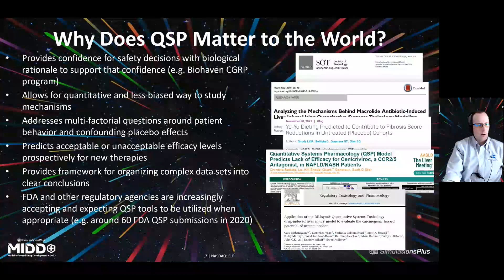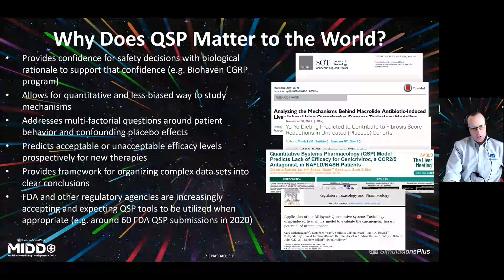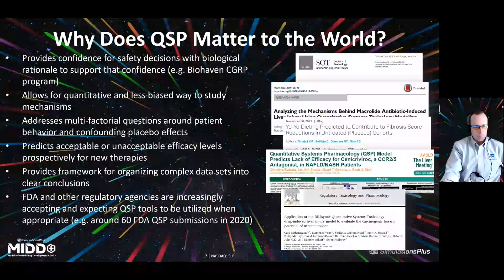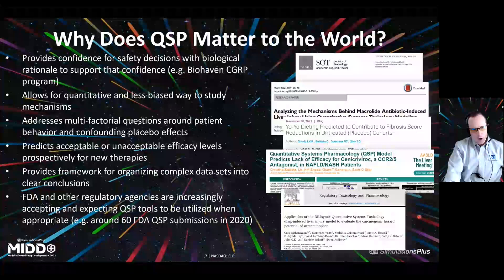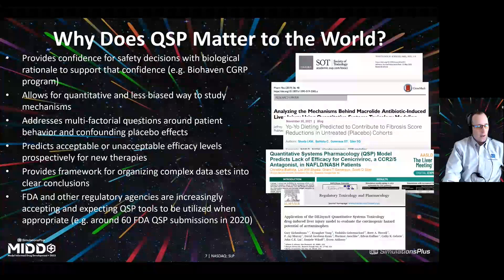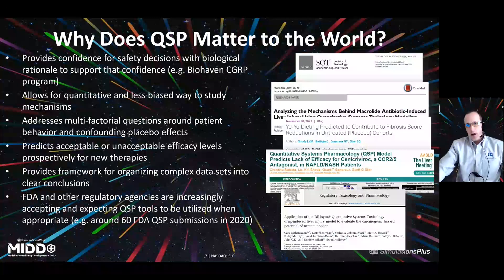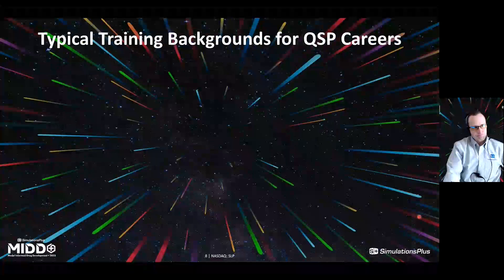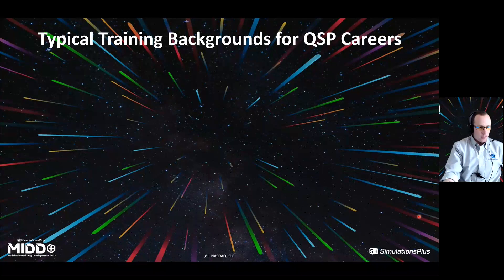QSP matters also because the FDA and other agencies are increasingly accepting and expecting submissions in certain situations when appropriate from these tools. In fact, there were around 60 FDA QSP submissions in 2020, and we're seeing a growing number. Regulators will begin to ask: can you put this in context with a modeling approach? QSP is an exciting discipline — it matters and it has an impact.